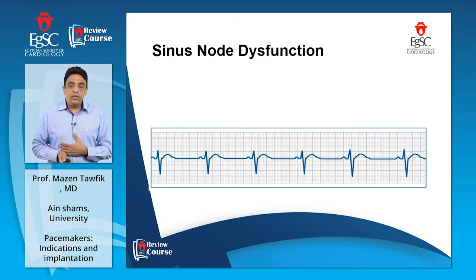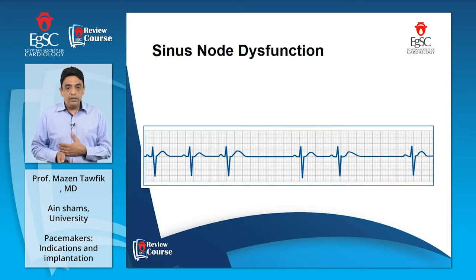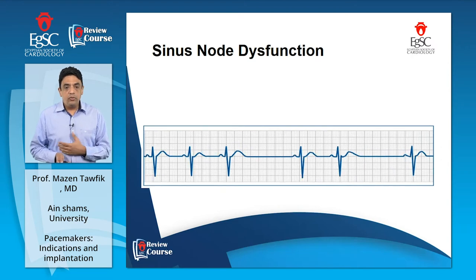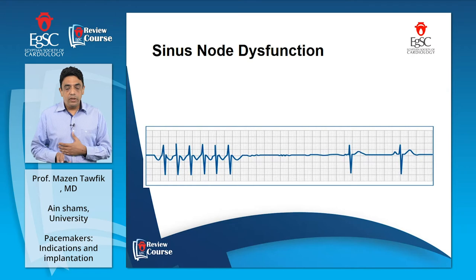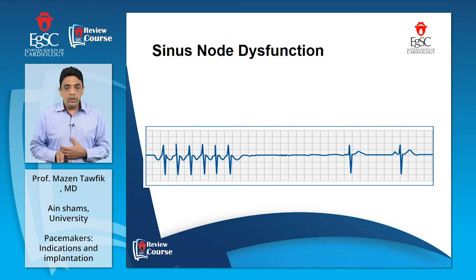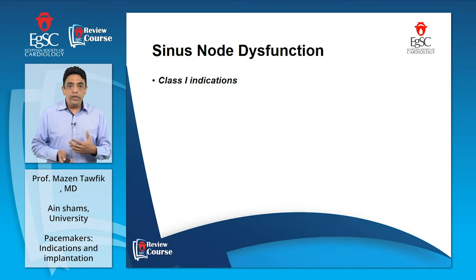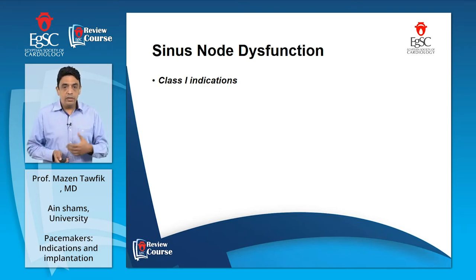The first recommendation group is sinus node dysfunction, including examples of sinus bradycardia, sinus pauses or sinus arrest, sinoatrial exit block, and sick sinus syndrome or brady-tachy syndrome — with alternating periods of tachycardia and sinus pauses or sinus blocks. For class I and class II indications, we will enumerate only those as the main indications for pacemakers across the different conditions.